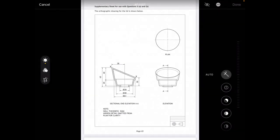This is the supplementary sheet that is provided for question 3. It says the orthographic drawing for the lid is shown below. Now what we've got is an elevation plan and the elevation is also sectioned so you can see what the model actually is going to look like on the left hand side.